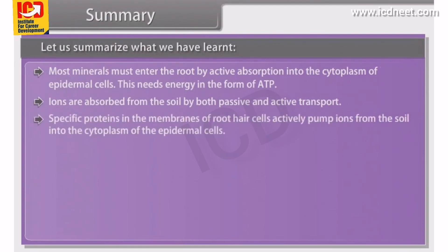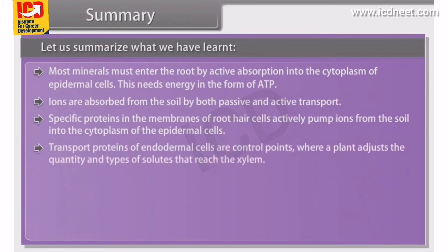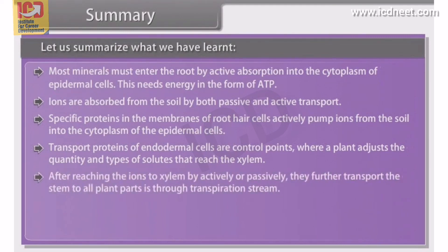Specific proteins in the membranes of root hair cells actively pump ions from the soil into the cytoplasm of the epidermal cells. Transport proteins of endodermal cells are control points where a plant adjusts the quantity and types of solutes that reach the xylem.